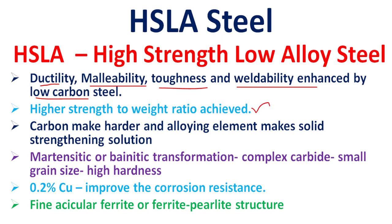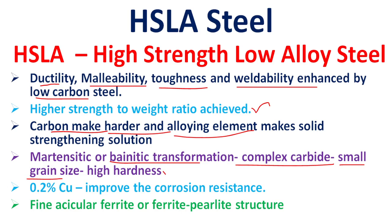Carbon makes the steel harder, and alloying elements contribute to solid solution strengthening. In HSLA steel, martensitic or bainitic transformation creates complex carbides, which lead to small grain size, giving the steel high hardness.